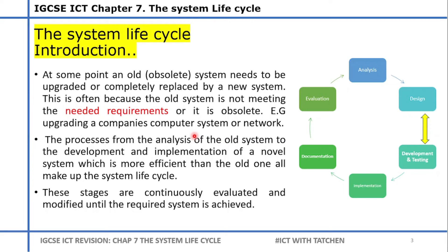First we need to understand what is the system life cycle. At some point in an industry, maybe a computer becomes obsolete — it's old, it's not doing what you want it to do. There is a need to upgrade or in some cases change your RAM, graphics card, and so on. We're looking at a whole system, maybe a computer network, an industrial setup, or a database.